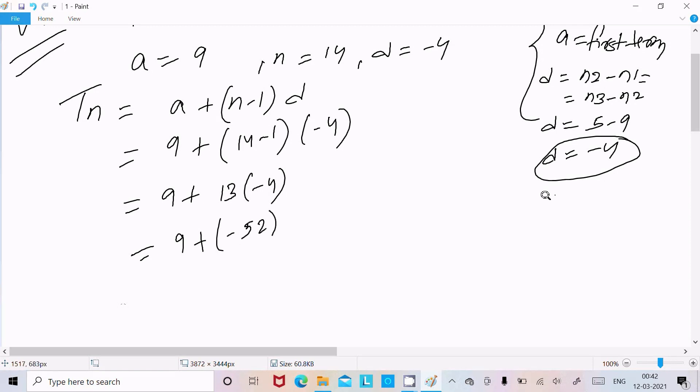So -52 + 9 equals -43. Therefore, T14 = -43. On the 14th position, the value is -43.